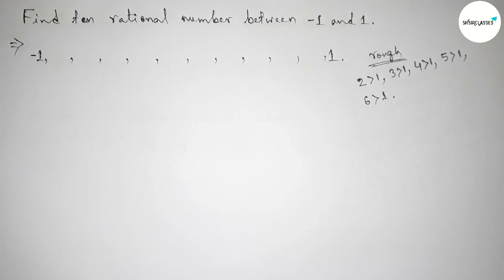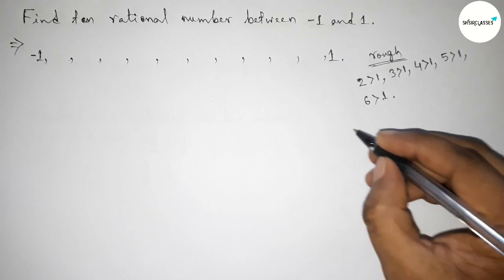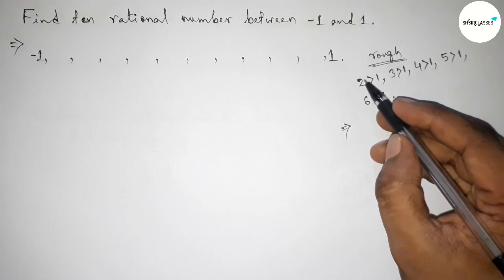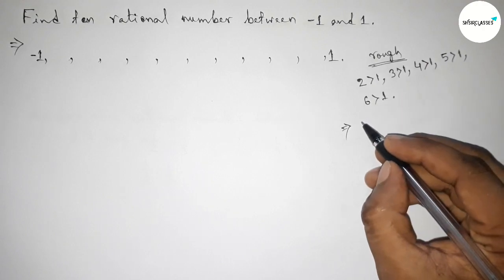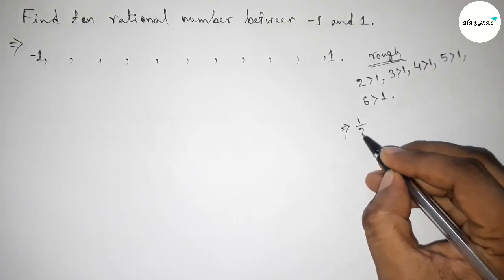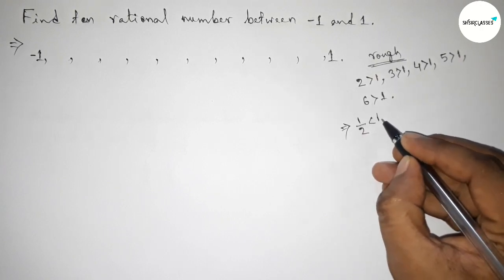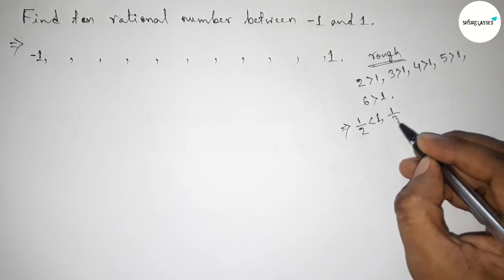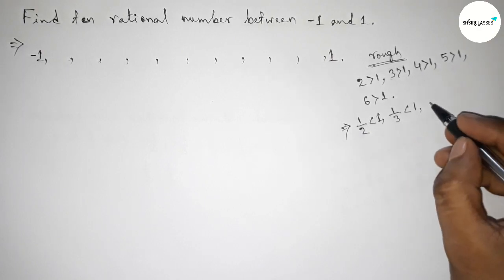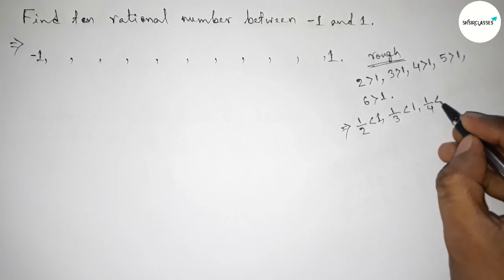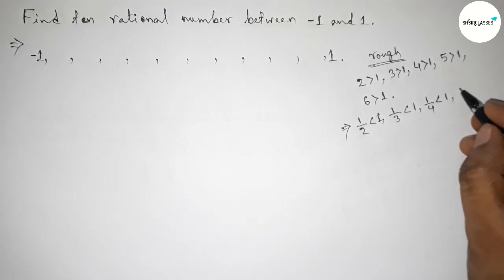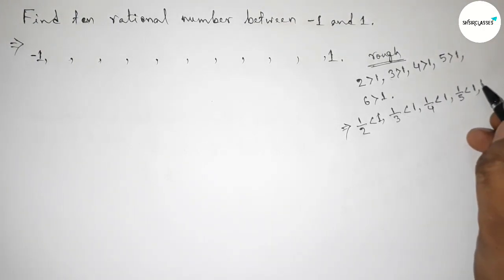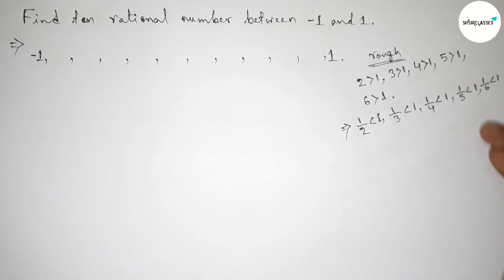Next, taking the inverse of all these numbers. Inverse of 2 is 1/2, which is always less than 1. Inverse of 3 is 1/3, less than 1. Inverse of 4 is 1/4, less than 1. Inverse of 5 is 1/5, less than 1. And inverse of 6 is 1/6, less than 1. So these are 5 rational numbers.